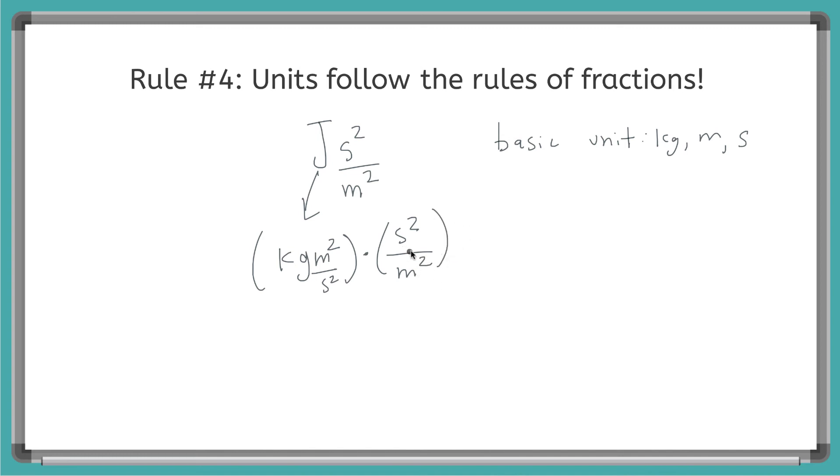So using rules of fractions, I can multiply these together because I don't need anything to look the same. So I can say kilogram, meter squared, second squared, all over, multiplying my denominators, second squared over meter squared. And then from here, using my rules of fraction, if I have something on the top that matches something on the bottom, I can cross it out. So I have a meter squared on the top. I have a meter squared on the bottom.